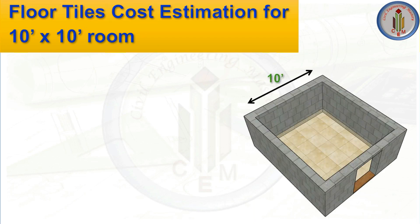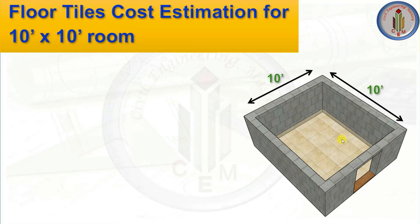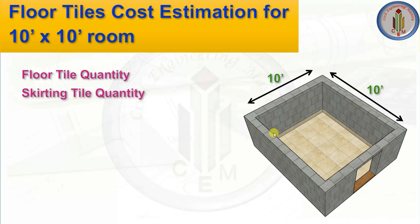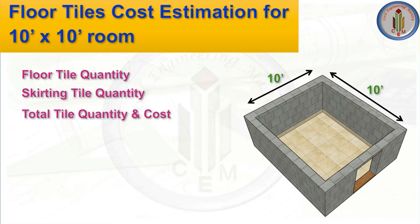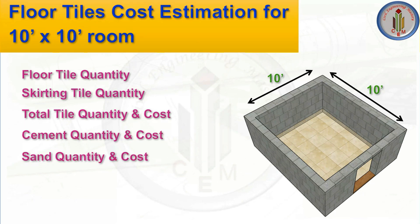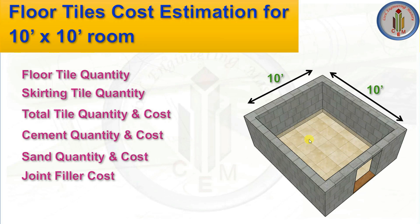Here's what we're going to calculate: first, the floor tile quantity; second, the skirting tile quantity — you may have seen in houses where there is a small portion of tiles placed on the walls along the floor edge, that is called skirting. We'll calculate the total tile quantity and cost, along with the joint filler cost and finally the labor cost.